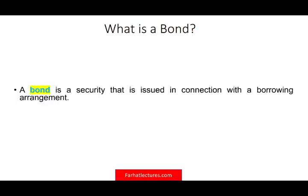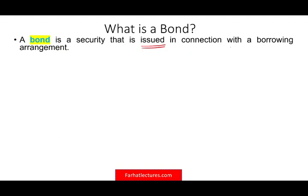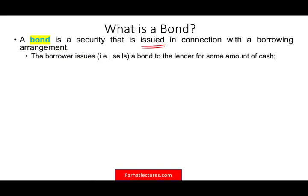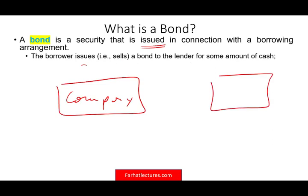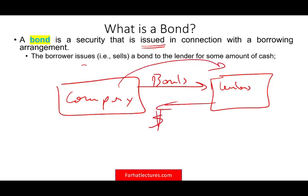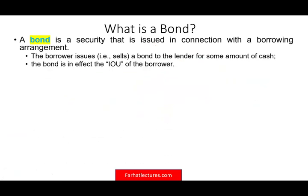So what is a bond? A bond is a security that is issued — it means sold — in connection with a borrowing arrangement. Simply put, the borrower, the company, issues or sells a bond to the lender for some amount of cash. The company gives the lender bonds and the lender gives the company money. The company then pays back interest plus the bond principal. So the bond is in fact an IOU of the borrower.